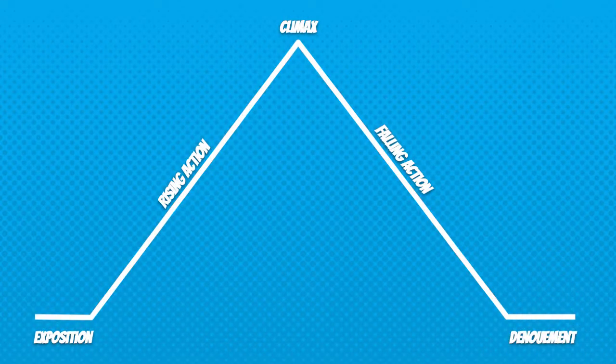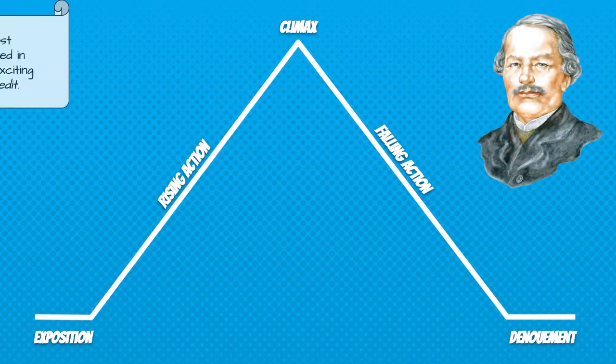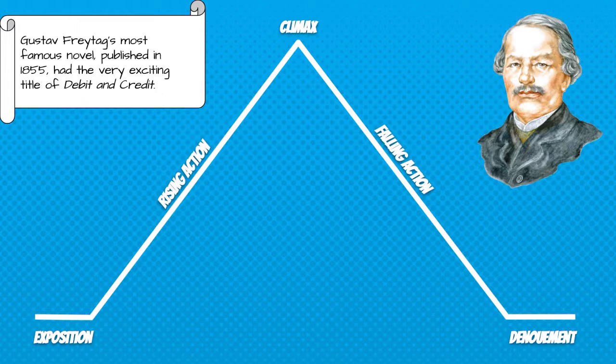In the last video, the two things I want you to keep in mind while thinking about plot are normalcy and conflict, and as we reviewed the idea of dramatic structure we used those ideas to guide us. A narrative starts in a state of normalcy, often described by the author in the exposition, but not always. The rising action begins when the main character first faces some conflict, and throughout the rest of the plot we see the character dealing with that conflict. Finally, the story ends with a denouement, which gives us a sense of the new state of normalcy.